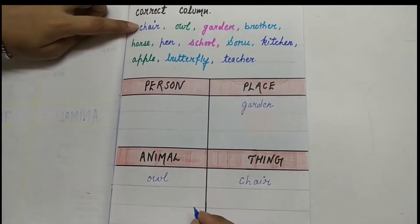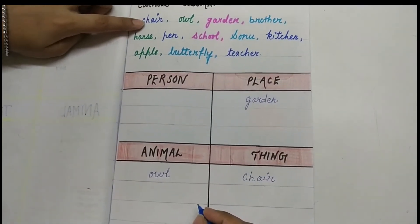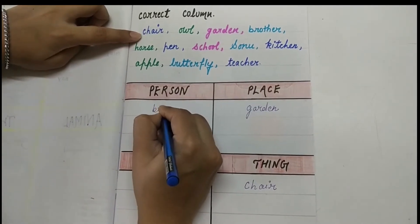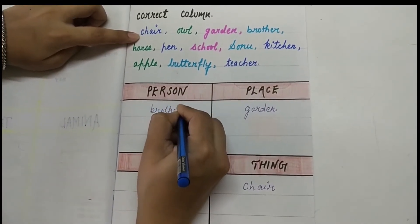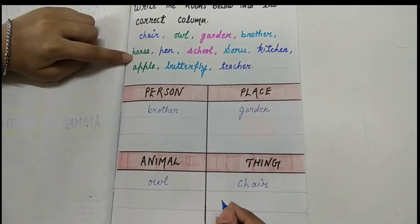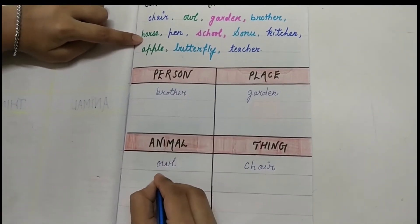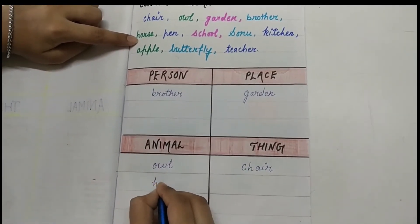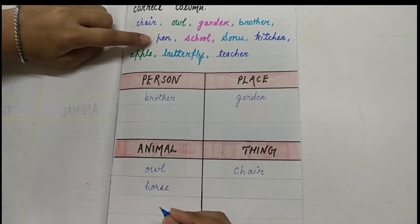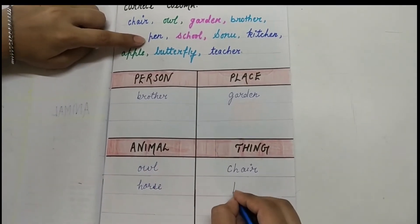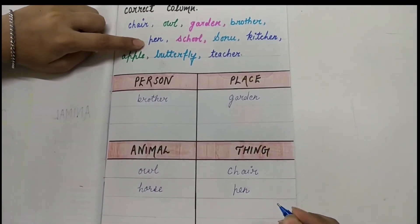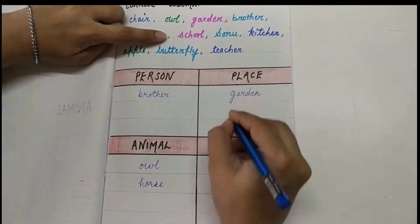Brother is a person. Horse is an animal, so in the animal column write down 'horse.' Pen is a thing. School is a place.